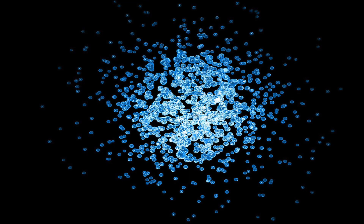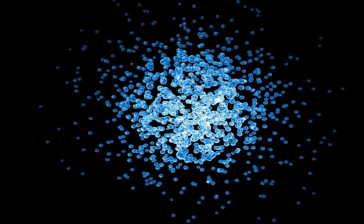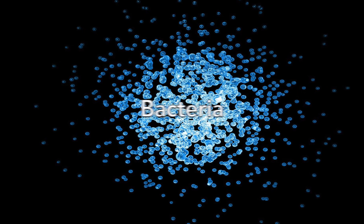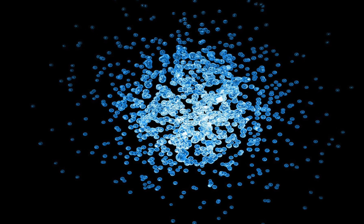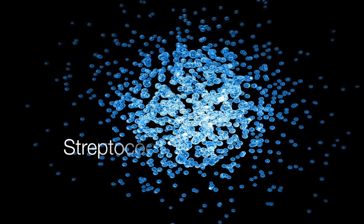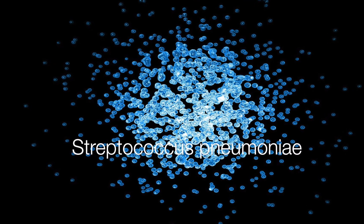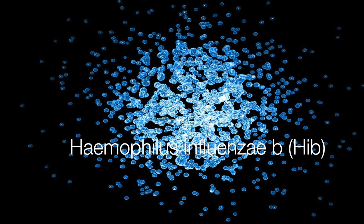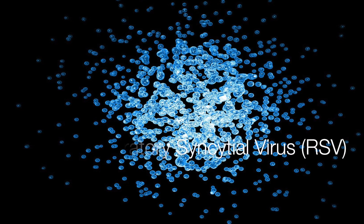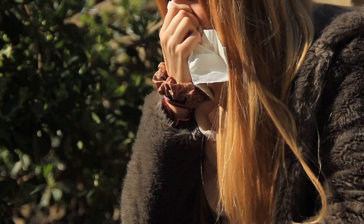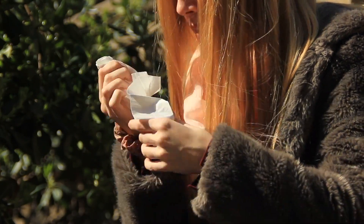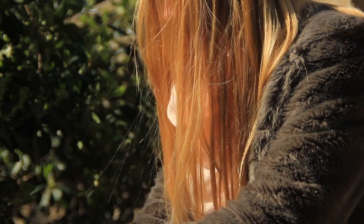Pneumonia can be caused by a wide variety of infectious agents, including bacteria, viruses and fungi. The common culprits are Streptococcus pneumoniae, Haemophilus influenzae type B, and respiratory syncytial virus. The transmission of these agents is often via airborne droplets from coughing or sneezing.